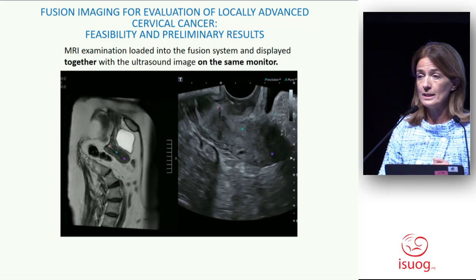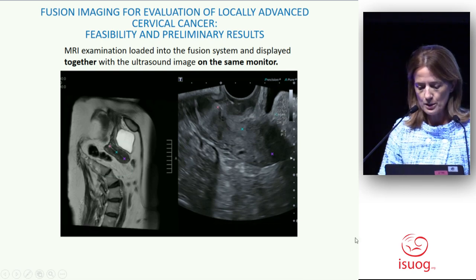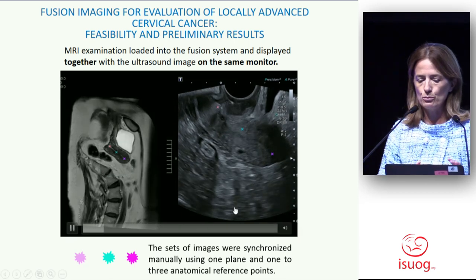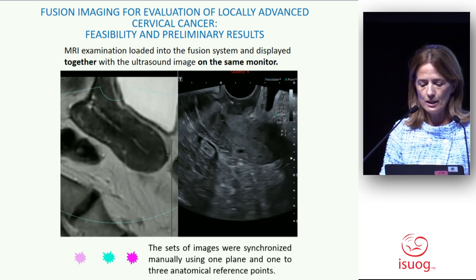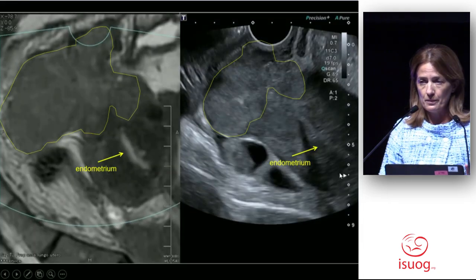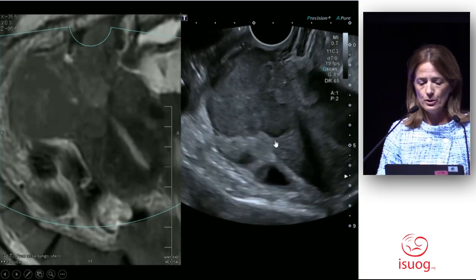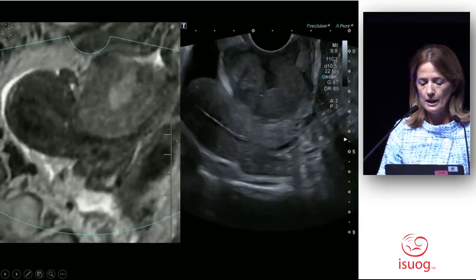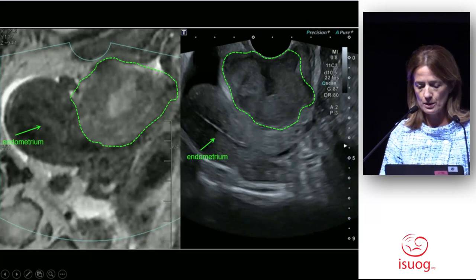Simply, how does it work? With three anatomical reference points, you find the anatomical landmarks, synchronize the MRI planes, and then you can navigate. This is an example of a lady with cervical cancer — magnetic resonance and ultrasound. After synchronization, you can check the paracervical infiltration — is there or not? Another example: this is the uterus and the tumor, magnetic resonance and ultrasound.